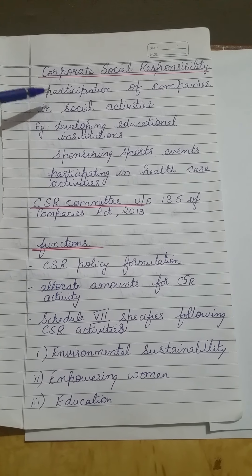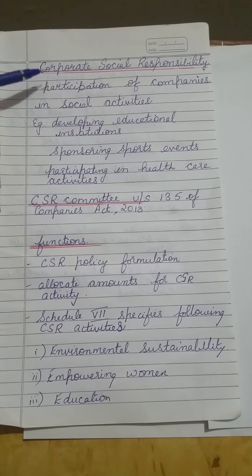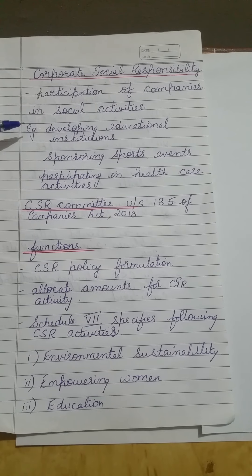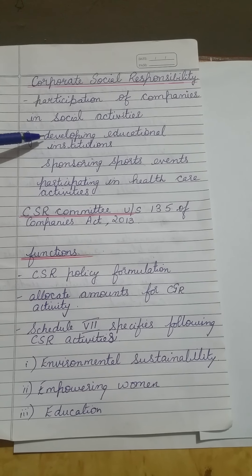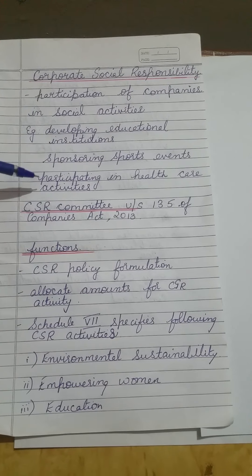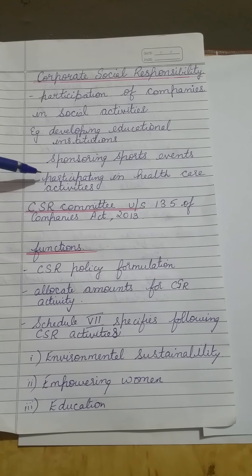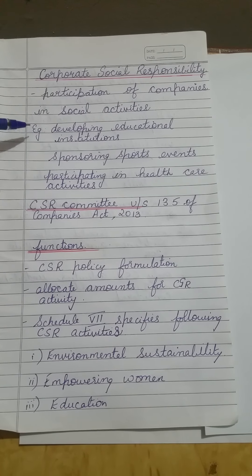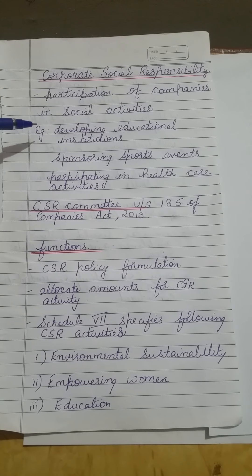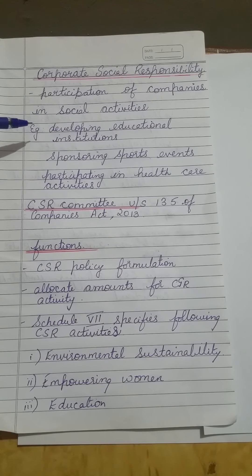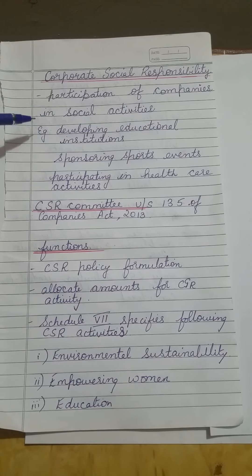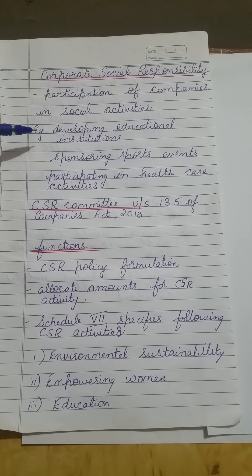There are various activities which companies can adopt in order to discharge corporate social responsibility towards the society, such as developing educational institutions, sponsoring sports events, participating in healthcare activities, maintaining parks, providing digital education to people, then promoting education in rural areas, and a host of other activities.